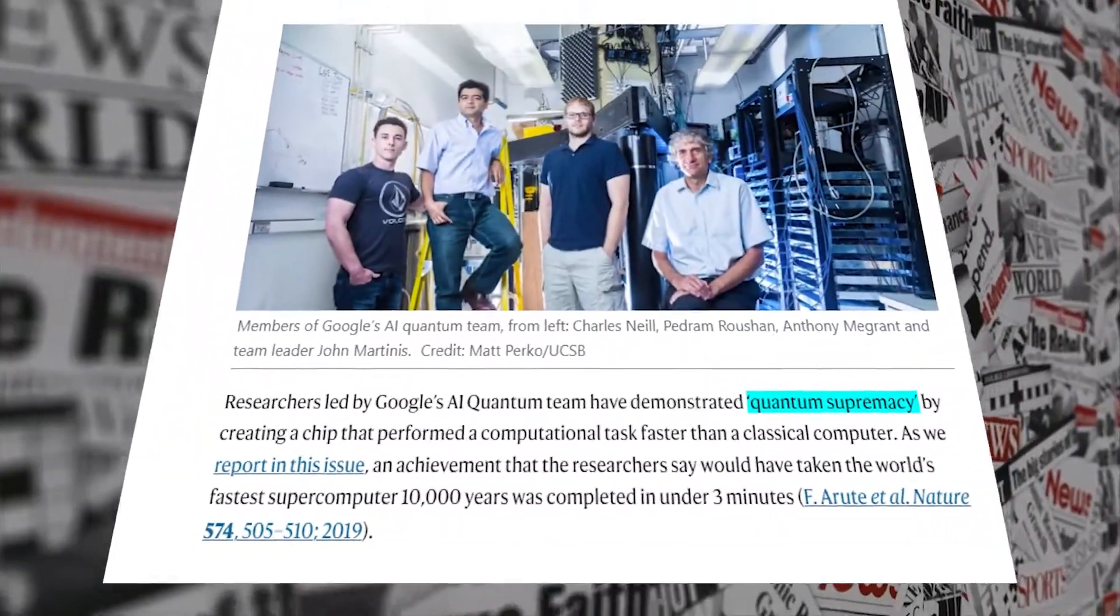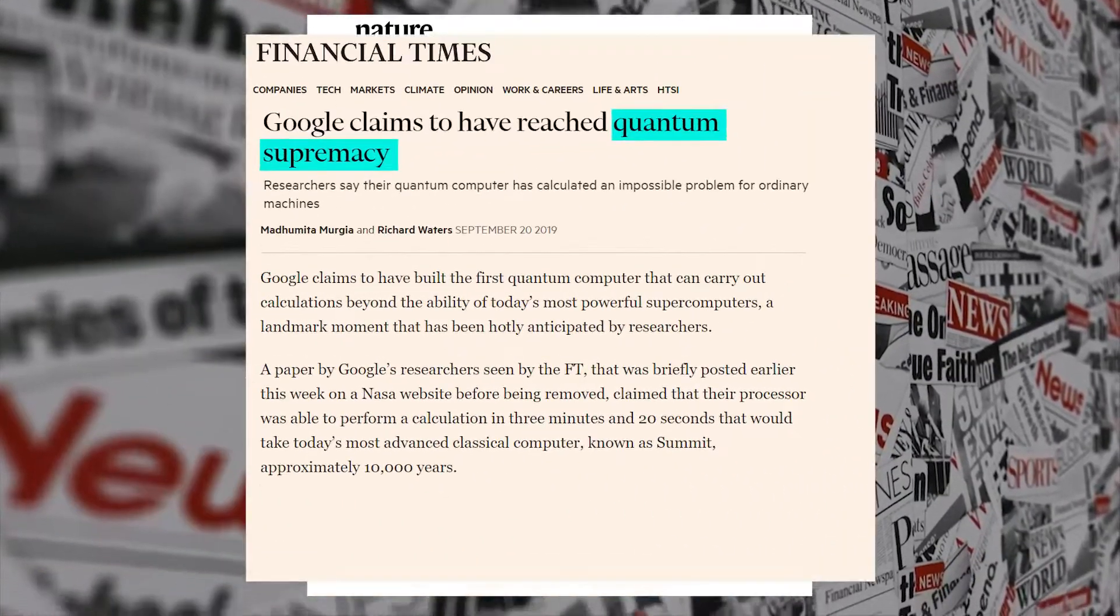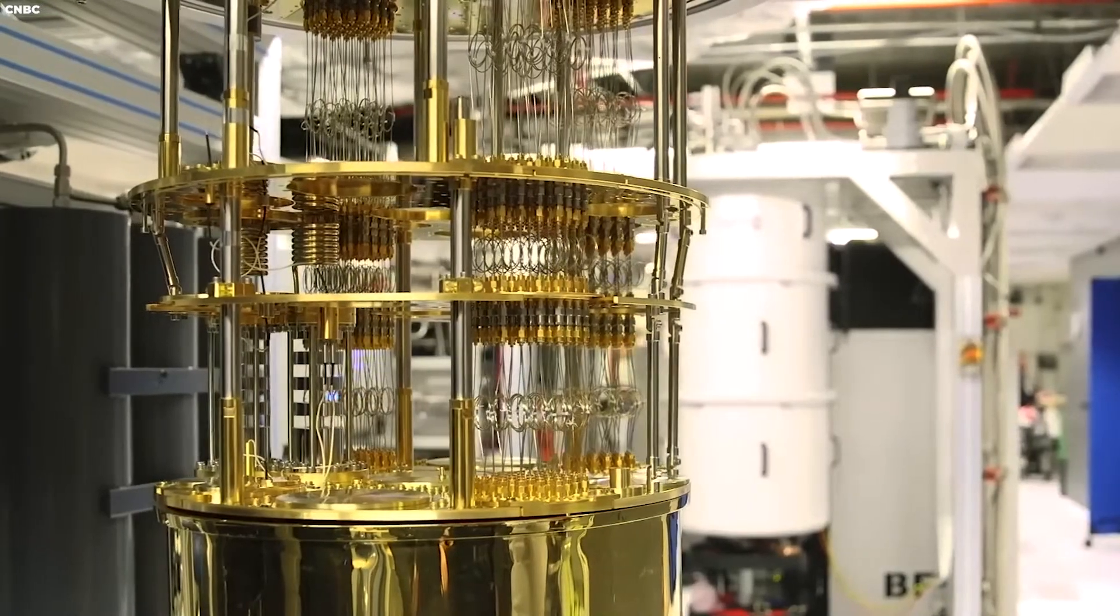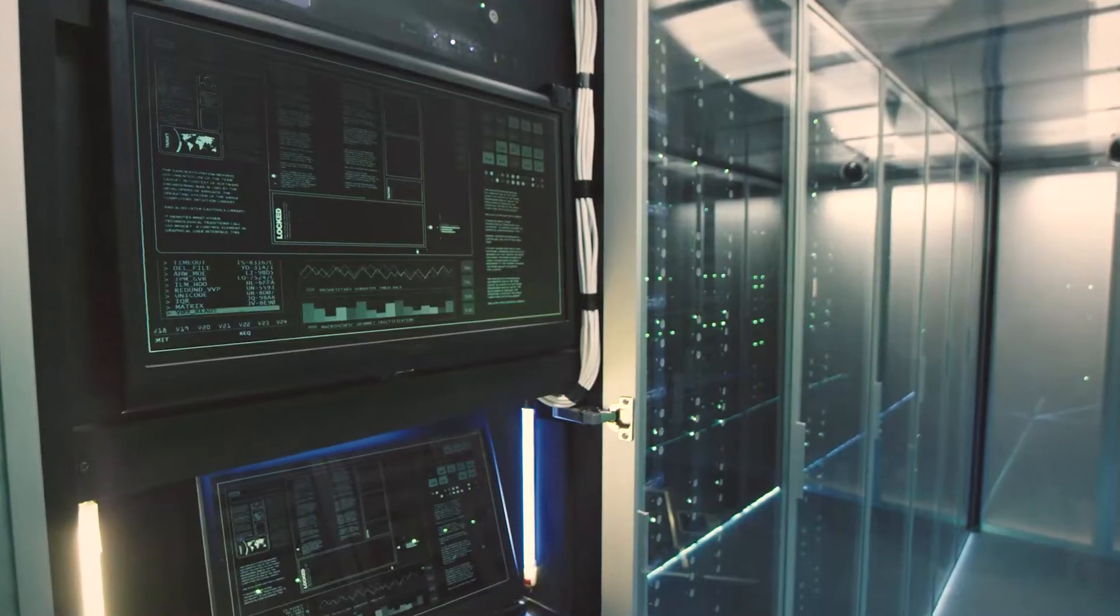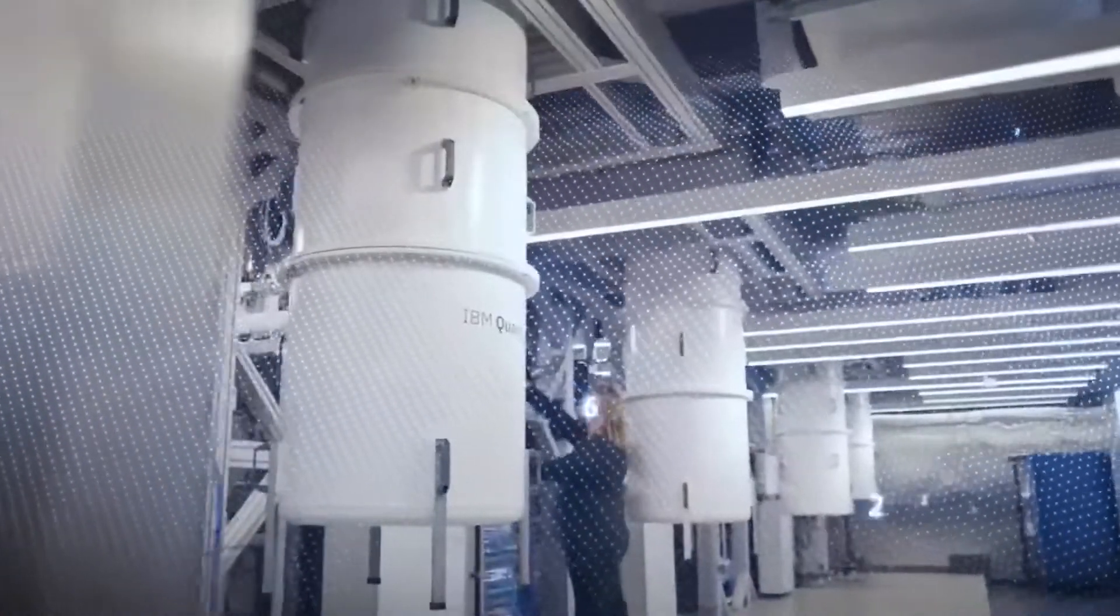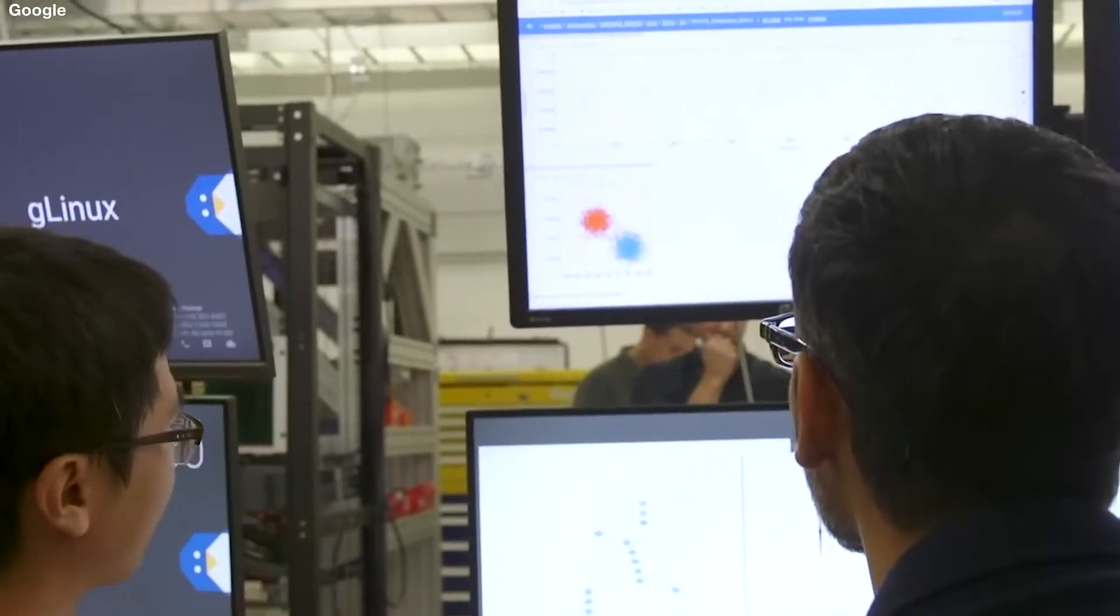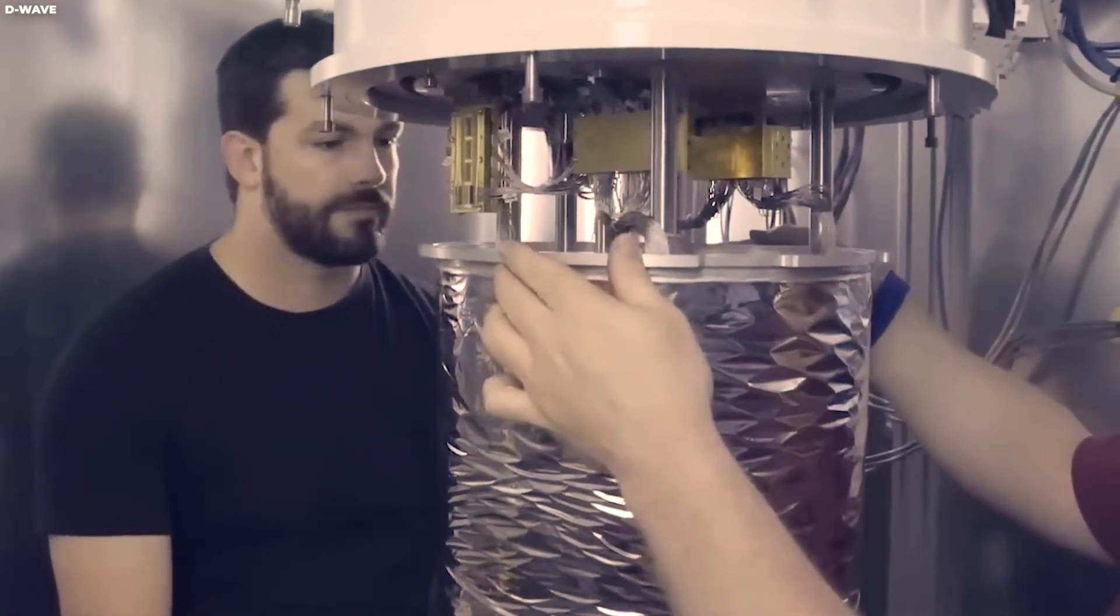In 2019, Google achieved a landmark moment in quantum computing known as quantum supremacy. This achievement demonstrated that their quantum processor, Sycamore, could perform a specific task in a fraction of the time it would take even the most powerful classical supercomputers, highlighting the potential of quantum computing to solve problems that are currently intractable for traditional computing systems.